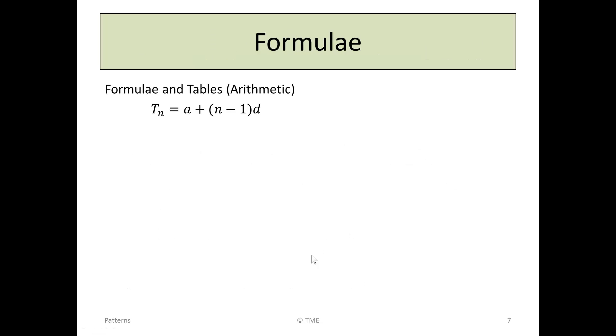There are formulae given to work out the terms in an arithmetic sequence. The formula for the nth term of a sequence is given by Tn equals A plus N minus 1 D. There's also a formula for the sum of the first n terms, and that's given as Sn is N over 2, 2A plus N minus 1 times D. Both of these formulae are given in your tables, you don't have to memorize them.